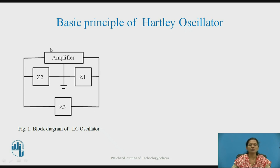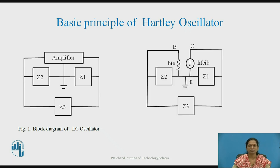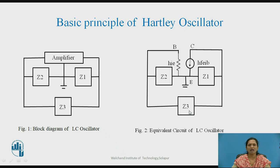If you simplify the amplifier in its H-model, it will look like this: HRI is the input impedance of the amplifier, and HFE·IB is the equivalent current source for the transistor, with Z2 replaced by the inductor and Z3 replaced by the capacitor to form the Hartley oscillator.